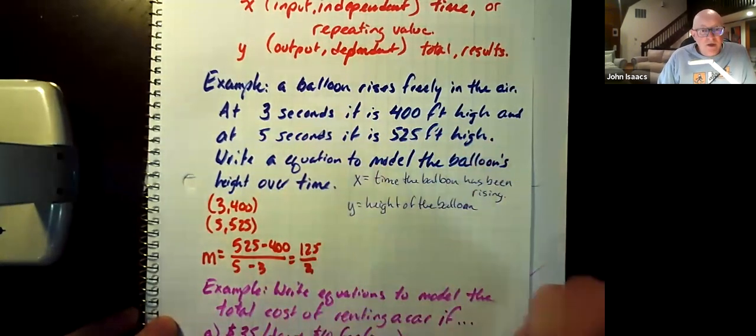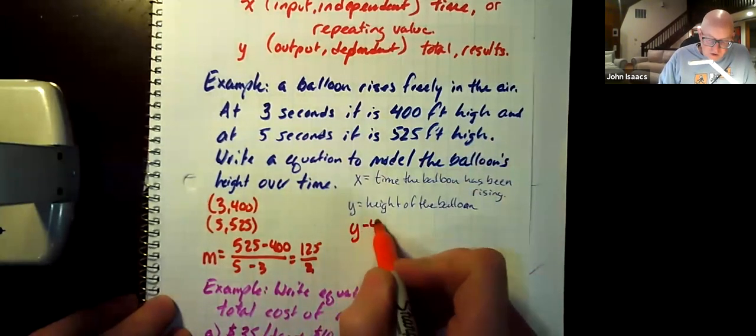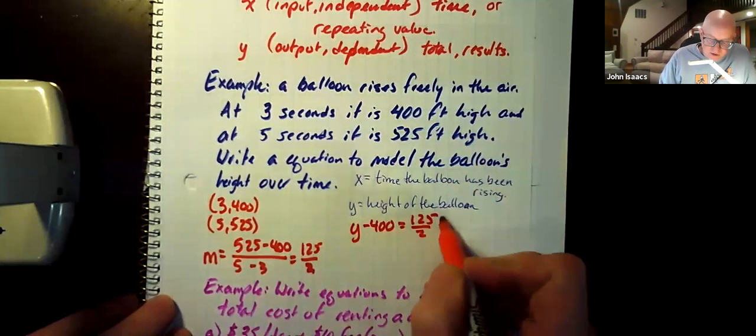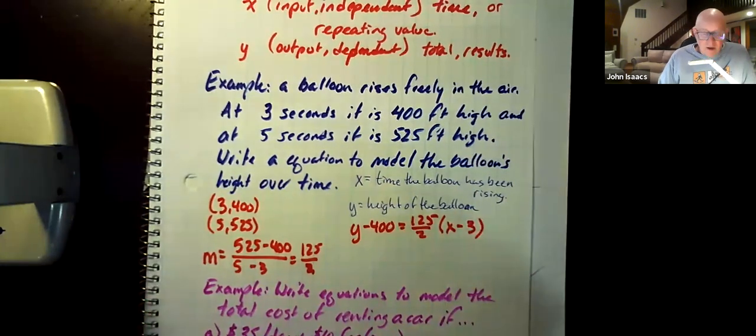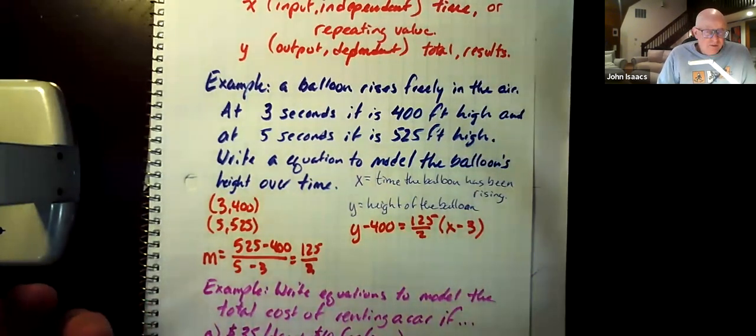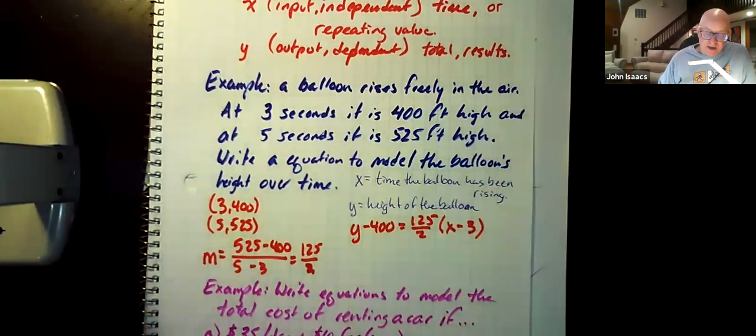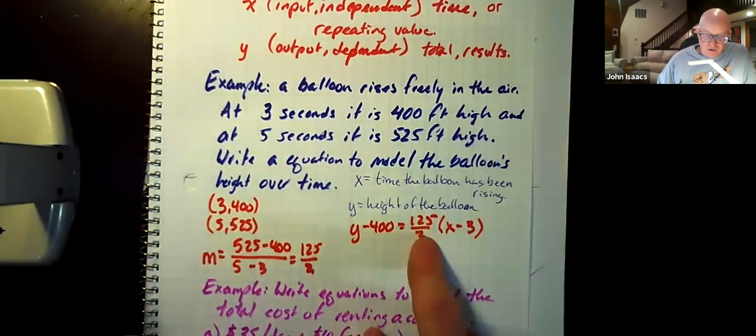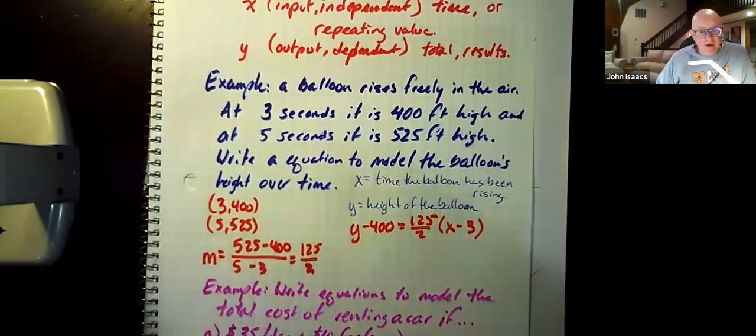Then we also have two different points given to us. So we can use point slope form. So we might write the equation y minus 400 equals 125 divided by 2, that's the slope, times x minus 3. And that would give us one possible equation for this line. And that would be a totally acceptable answer. Realize that some people might write y minus 525 equals 125 over 2 times x minus 5. And that would totally be fine as well. Either one of those answers is totally fine.